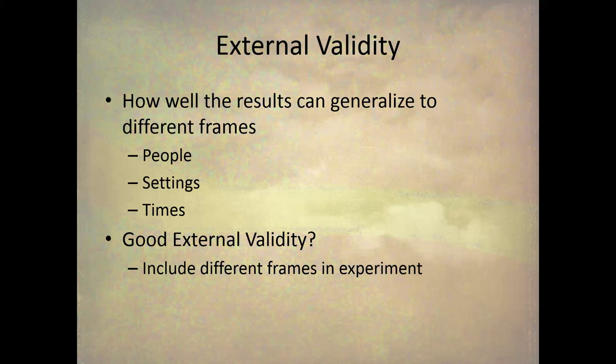Let's turn first to external validity. The definition is how well the results can be generalized to different frames. We're talking about the results of the experiment — what you find in terms of the relationship between the IV and the DV. Generalization means going beyond just the sample in your study and applying results to everyone. 'Different frames' refers to specifically what things we want to apply the results to.